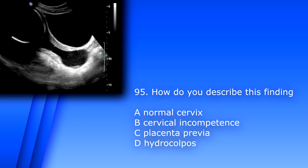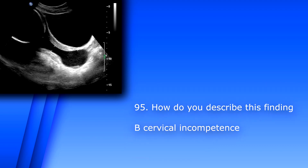Question 95. How do you describe this finding? A. Normal cervix. B. Cervical incompetence. C. Placenta previa. D. Hydrocolpos. The answer is B, cervical incompetence.